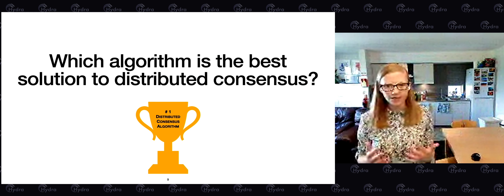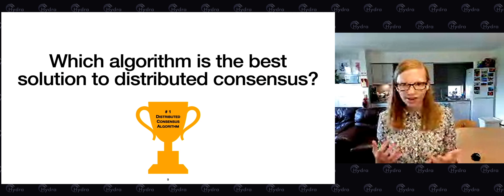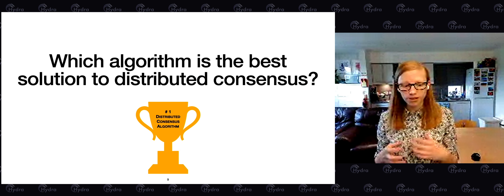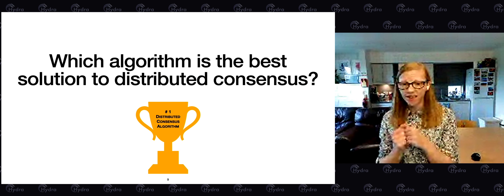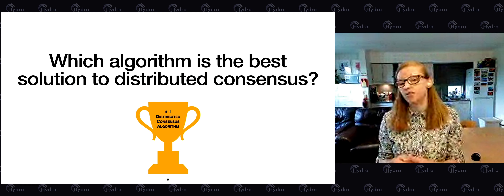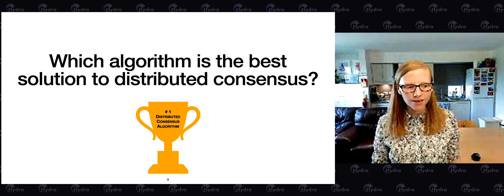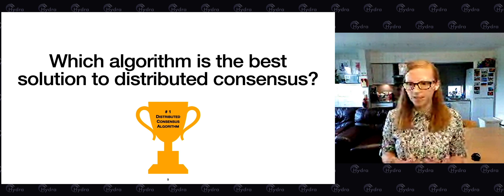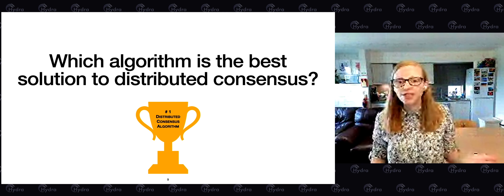Given the community is divided between these two algorithms, the natural questions are: who got it right? Is one algorithm better than the other? Is it the case that certain problems suit certain algorithms — Raft for some, Paxos for others? Or are they actually the same algorithm, with Raft being just a tutorial on how to implement Paxos? It's important to understand these questions and to know which algorithm to choose when you're working with consensus.